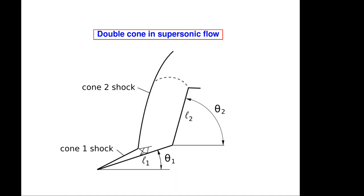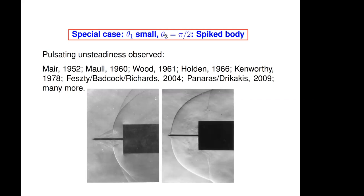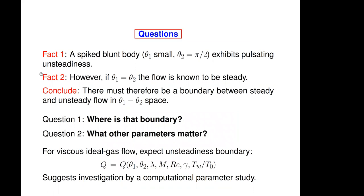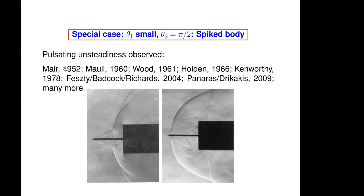So this problem has been studied a hell of a lot. One particular manifestation of it is the special case when theta one is small and the second angle is 90 degrees. This is what we call a spiked body. One of the first people to notice this pulsating unsteadiness in such a case was Professor Austin Mayer of Cambridge 1952 at Mach number one and a half. Then at that time, John Stollery built together with Maul and Belcher a gun tunnel for hypersonic flow. John Stollery was always very interested in practical hypersonic flows. So he wanted to see whether a spiked body with the spike could reduce the heat flow, heat load and the drag of a blunt body. So he got David Maul to do his PhD in 1960 on this topic and he got some very nice photos in hypersonic flow.